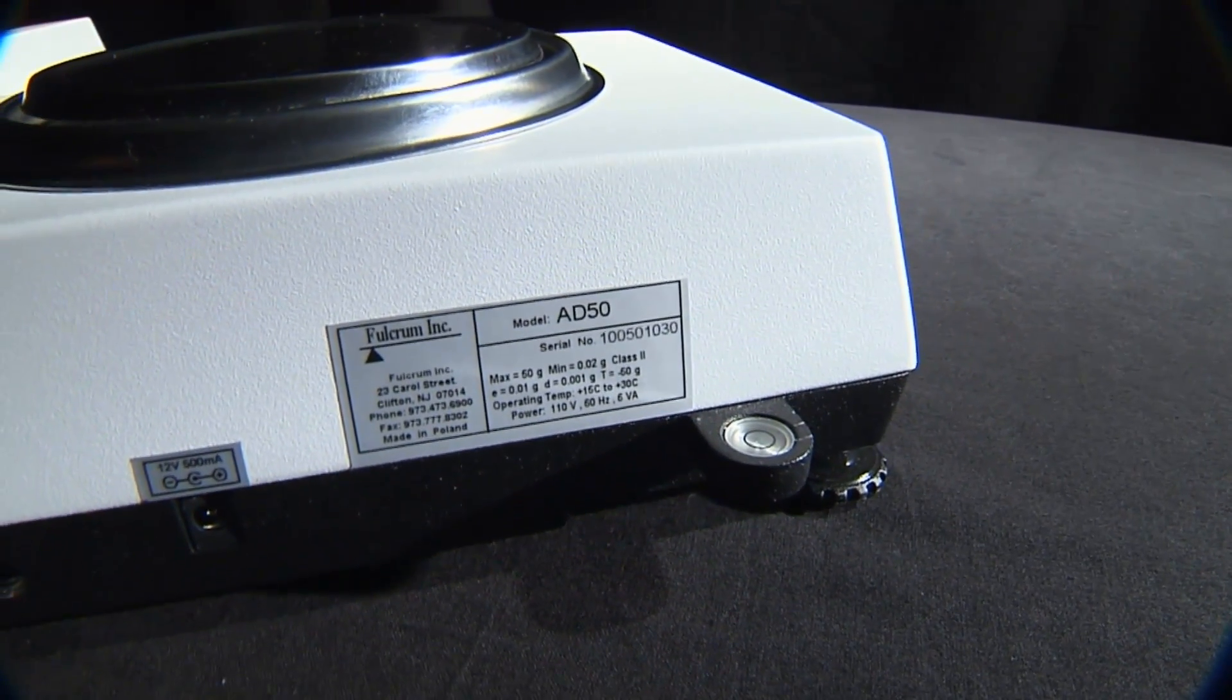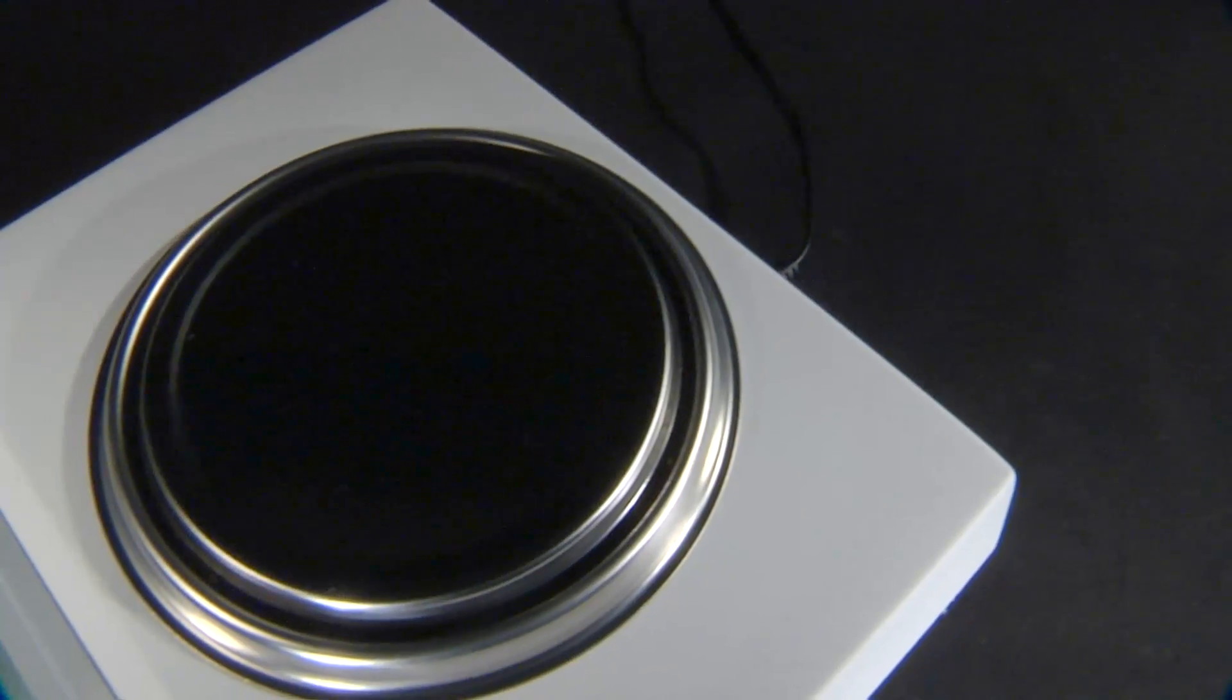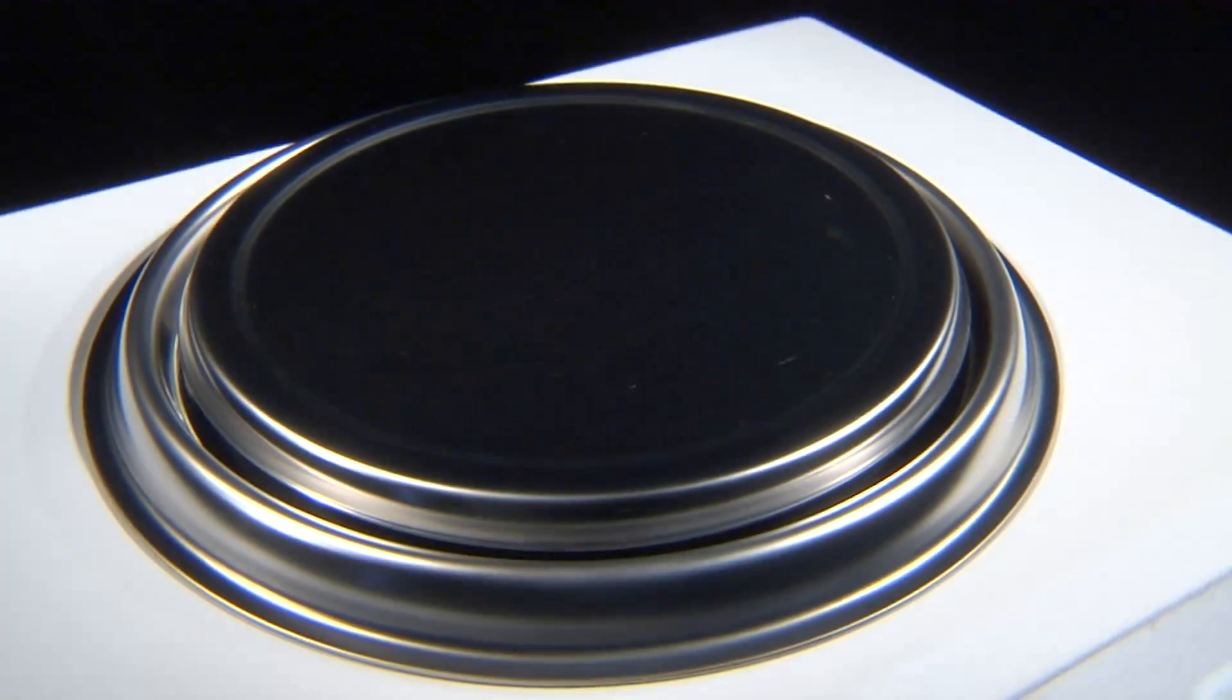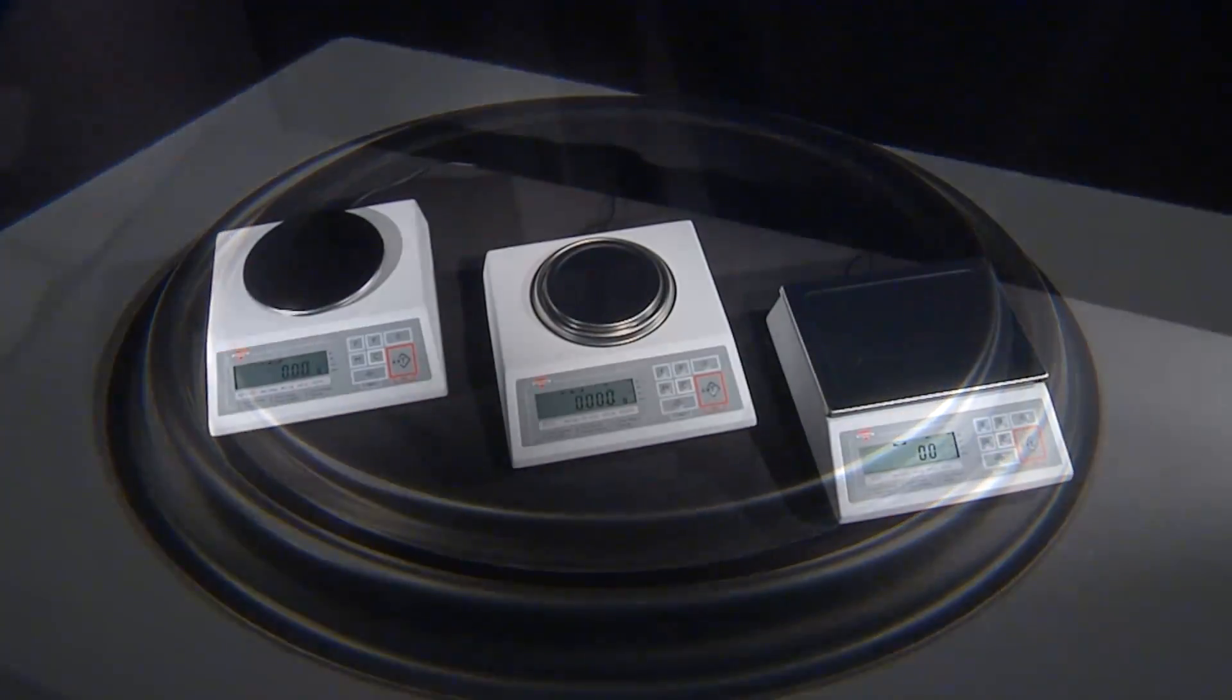The AD also is furnished with a stainless steel pan that is resistant to chemicals and possible staining. Depending on the capacity of the scale, the pan is furnished in three different sizes.